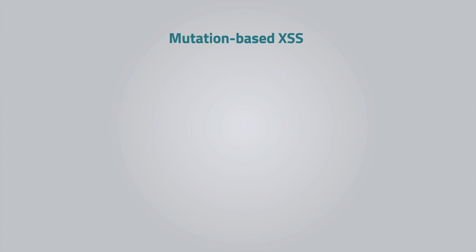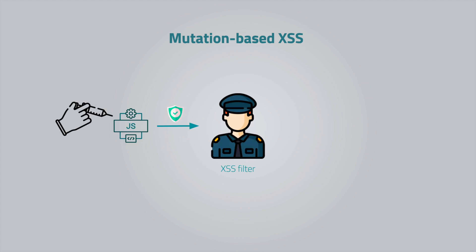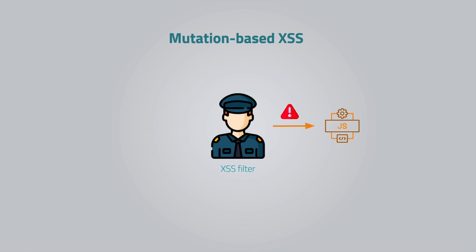Finally, we have mutation-based attacks, which is a new category of cross-site scripting. This is the hardest so far, both in terms of creation and protection. The idea is to generate code that will appear clean before bypassing XSS filters, then the code will change by adding or concatenating a portion of code that turns it into malicious code that will perform the damage. This way, the attacker can bypass security measures and actually do the damage.